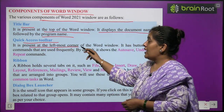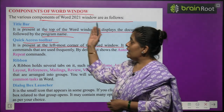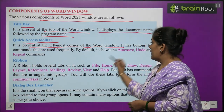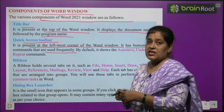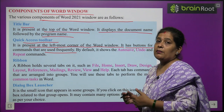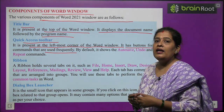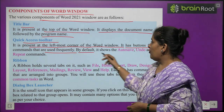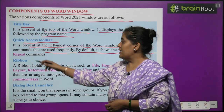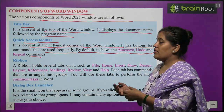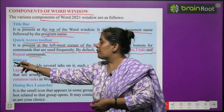The Quick Access Toolbar has buttons for commands that are used frequently when we work in MS Word. By default it shows the Auto Save, Undo and Repeat commands. Next, the Ribbon — a ribbon holds several tabs on it.